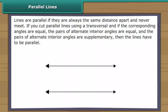You can also check if lines are parallel by cutting the lines using a transversal. If the corresponding angles are equal, the pairs of alternate interior angles are equal, and the pairs of alternate interior angles are supplementary, then the lines have to be parallel.